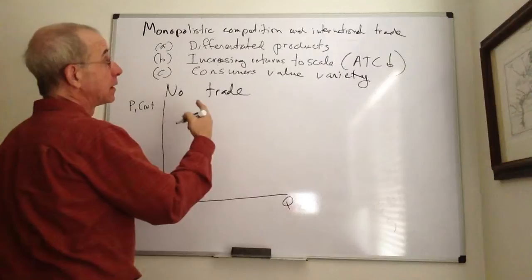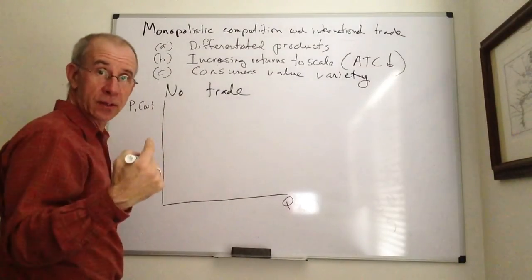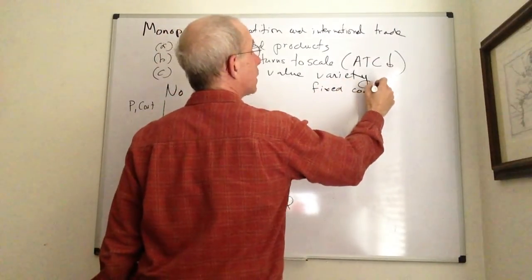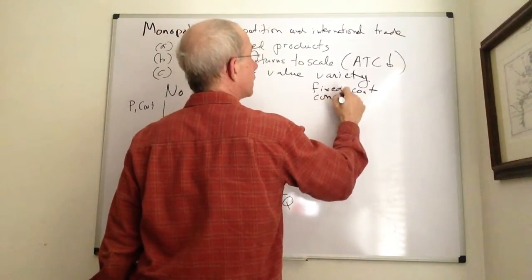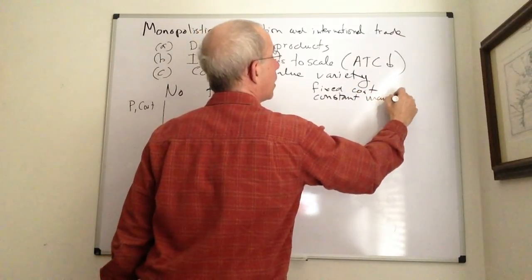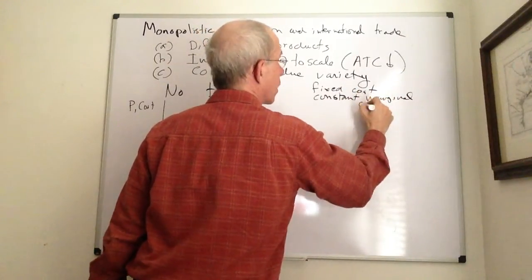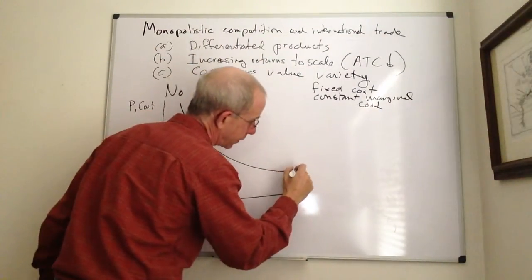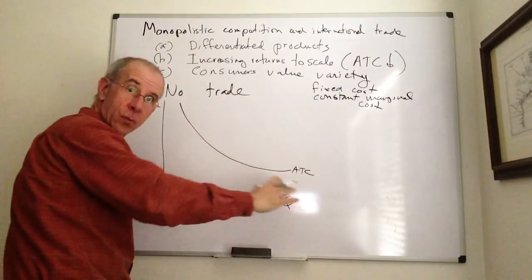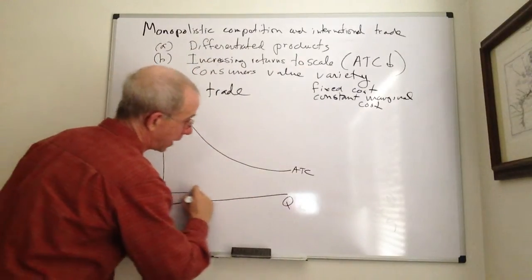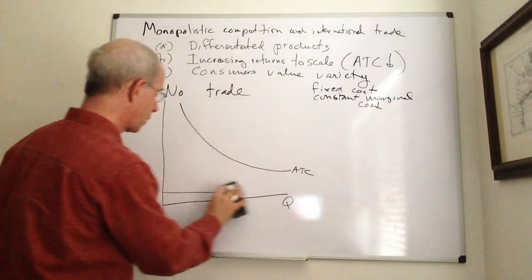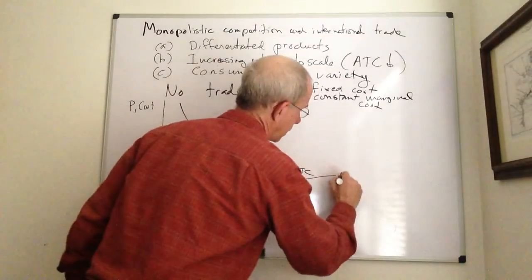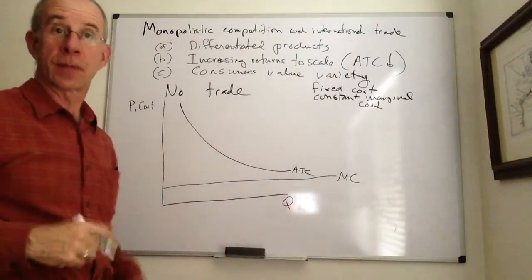And the particular way that I'm going to have the increasing returns to scale, is that we're going to have a fixed cost and constant marginal cost. The upshot of this is that the average cost curve is going to be downward sloping. And then we'll have a marginal cost, which is constant.